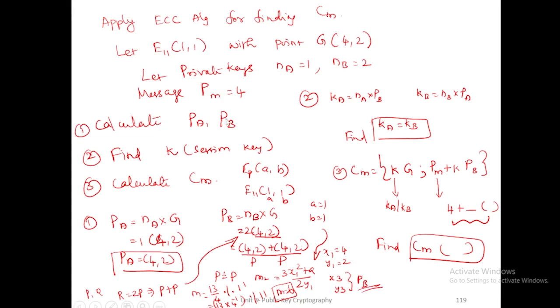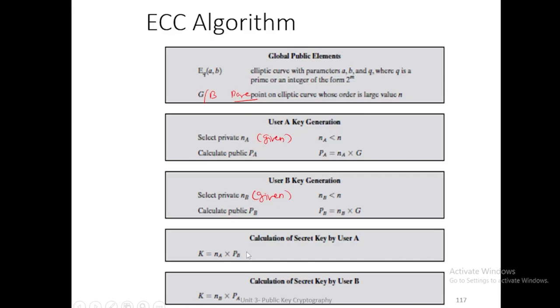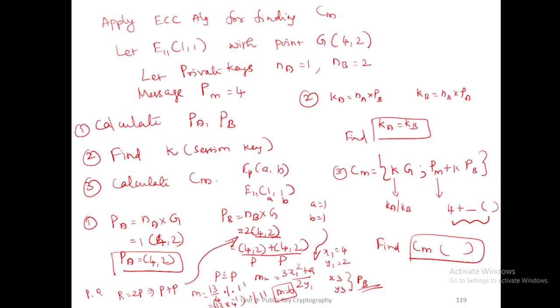For finding session key, the formula is ka at user a and user b. You should calculate those two values and verify whether those two points are the same. Here pa and pb are given two points. ka = na * pb, kb = nb * pa. So na is 1, so the pb value will be taken as ka. And nb is 2, so 2 of (4,2), the same pb value will occur. So ka and kb are equal. Just write ka and kb is your pb value. That pb value will be taken as secret key k.